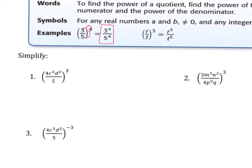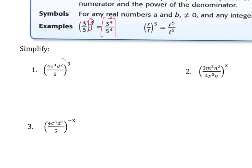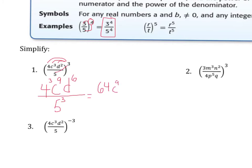We are going to use the exact same concept for our first example here. We are going to take the three and put it on each number or variable in the parenthesis. So if we rewrite this, we get four to the third, times c to the third raised to the third. So c to the third times three gives us c to the ninth. With d, we multiply two times three to get d to the sixth. And five to the third gives us 125, which will be our final answer.